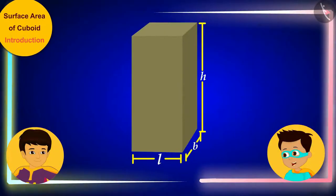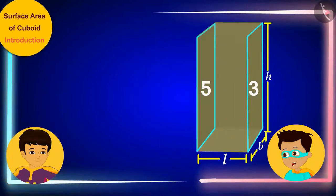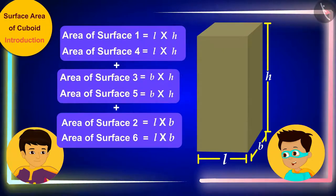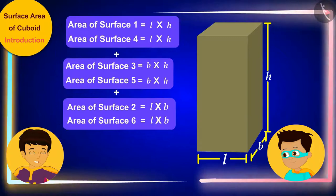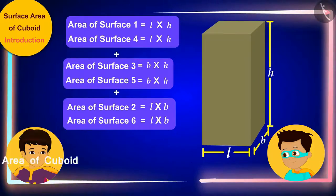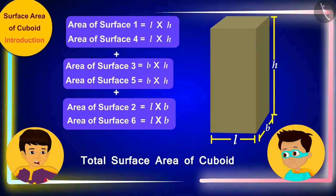Great! So we only have to add the area of these six surfaces to find the paper needed to cover the cuboid box. And Thomas, do you know that the sum of the areas of all the surfaces or all the faces of any three-dimensional shape is called its total surface area?